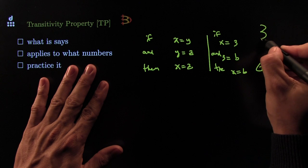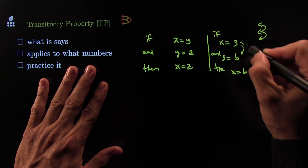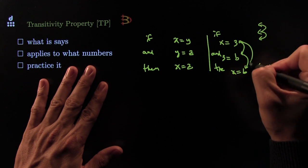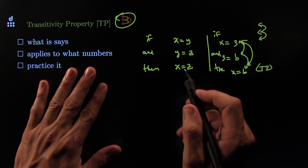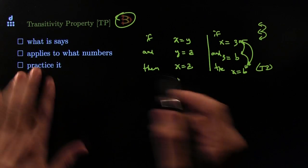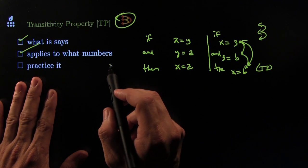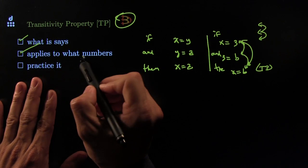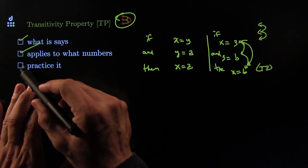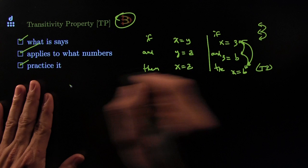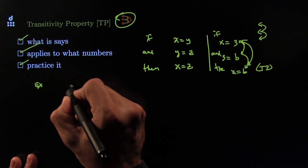The icon is exactly the same idea as what the Transitivity Property conveys: you've got three items — this one equals this one, this one equals that one, therefore the first one must equal the last one. That's what it says. It applies to all the numbers in our class — maybe not in future classes, but for sure all the numbers, terms, and variables in our class. We've actually been using this all along. Let me give you an example.